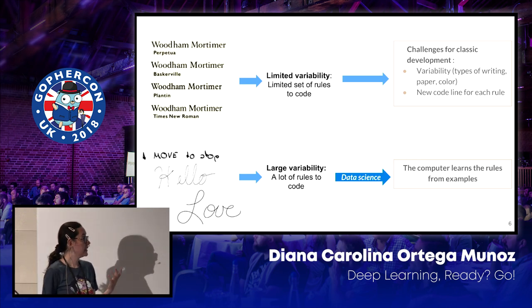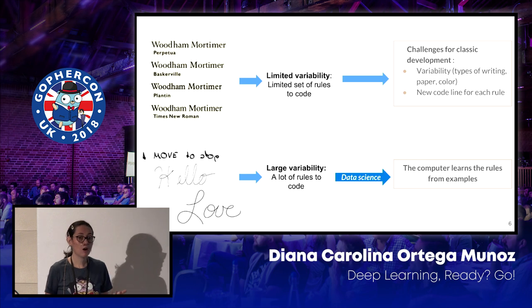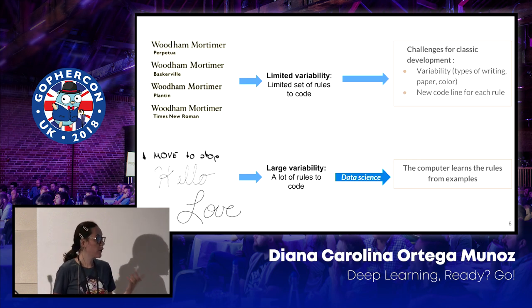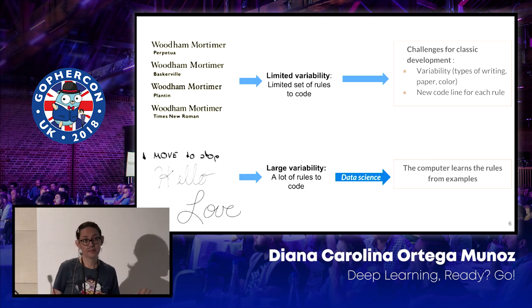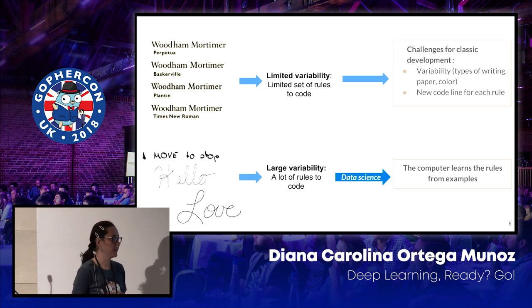In this case, it's better if the computer could learn all the rules from examples. And that's a machine learning problem. And that's how we solved it.